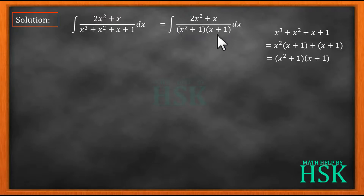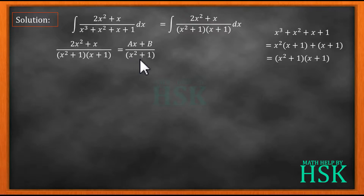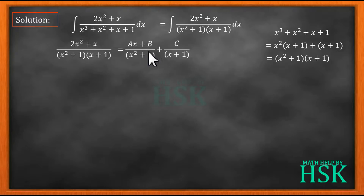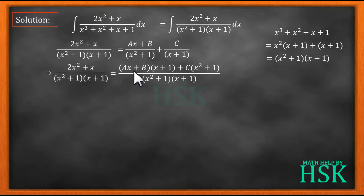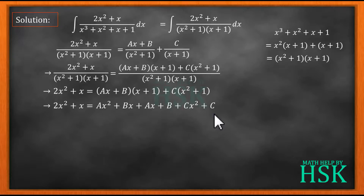I can see that this fraction can be resolved into its partial fractions, which will make the integration possible. So I write (2x² + x) / [(x² + 1)(x + 1)] as equal to (Ax + B) / (x² + 1) + C / (x + 1). Here I have written Ax + B because the factor x² + 1 is quadratic. Taking the LCM of the right hand side and cancelling denominators, I get 2x² + x = (Ax + B)(x + 1) + C(x² + 1).